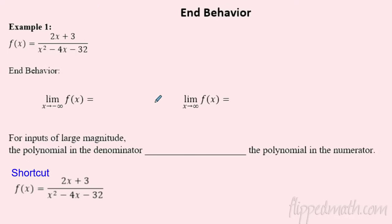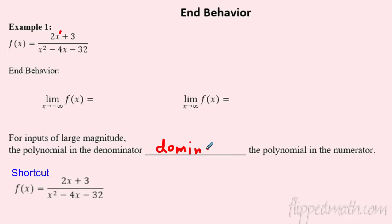That was just numerical. Can we do it algebraically? Yes — write this one down. The highest power wins. When I look at the polynomial on top of the rational function, the highest degree is 1; on the bottom it's 2. The biggest power wins. For inputs of large magnitude, the polynomial in the denominator dominates because it has the higher power. So one side is going to dominate the other.